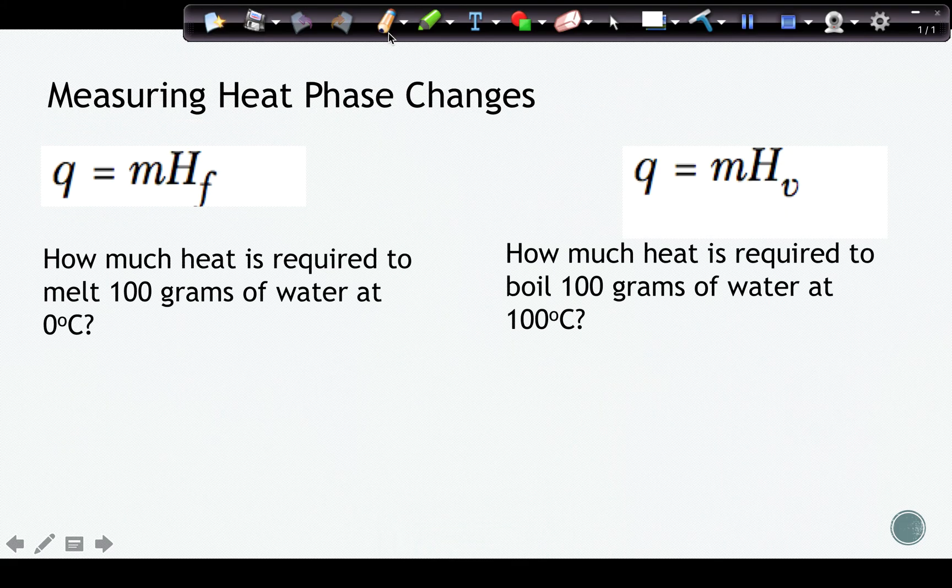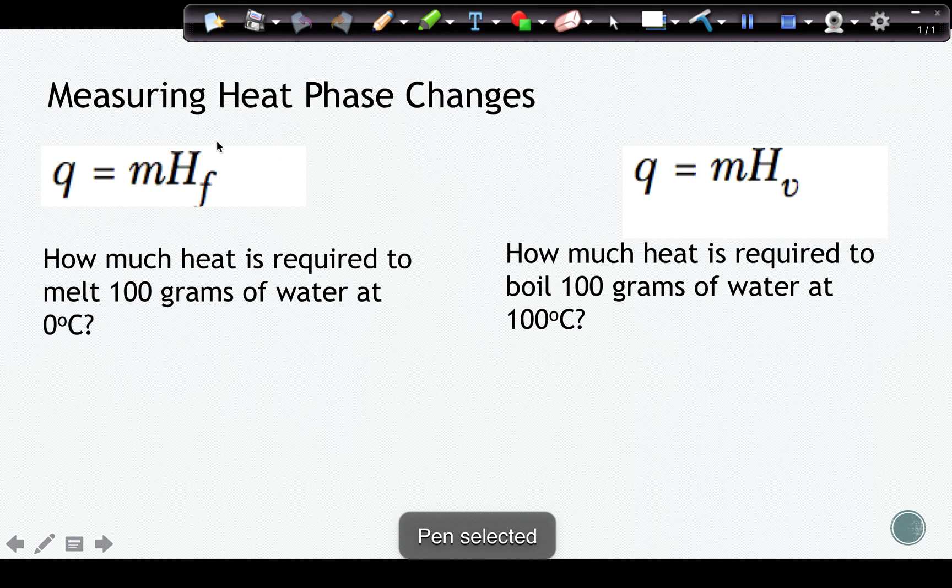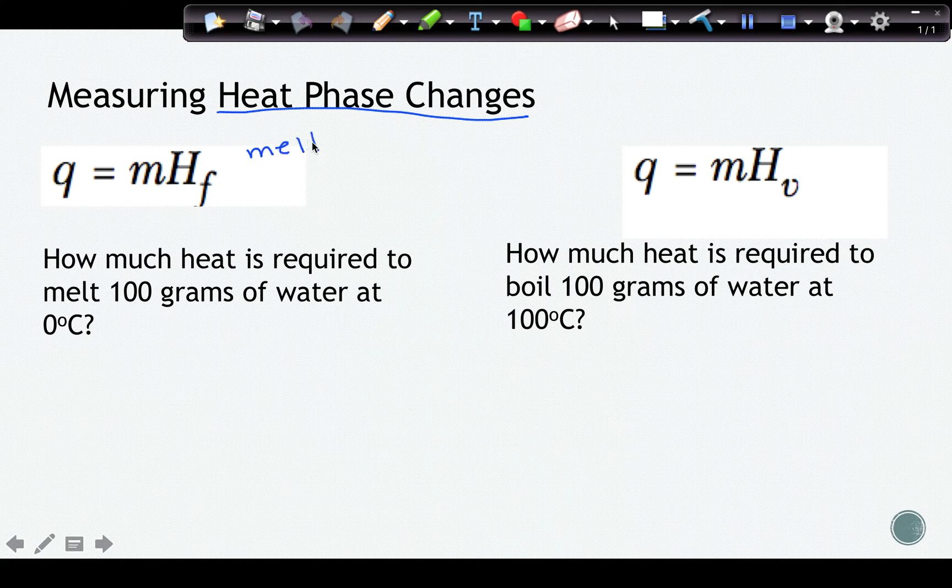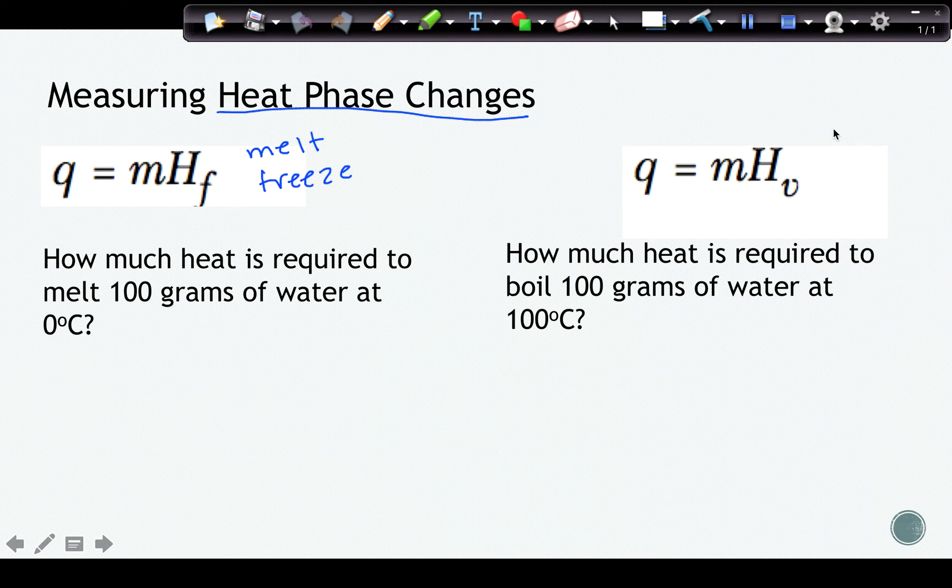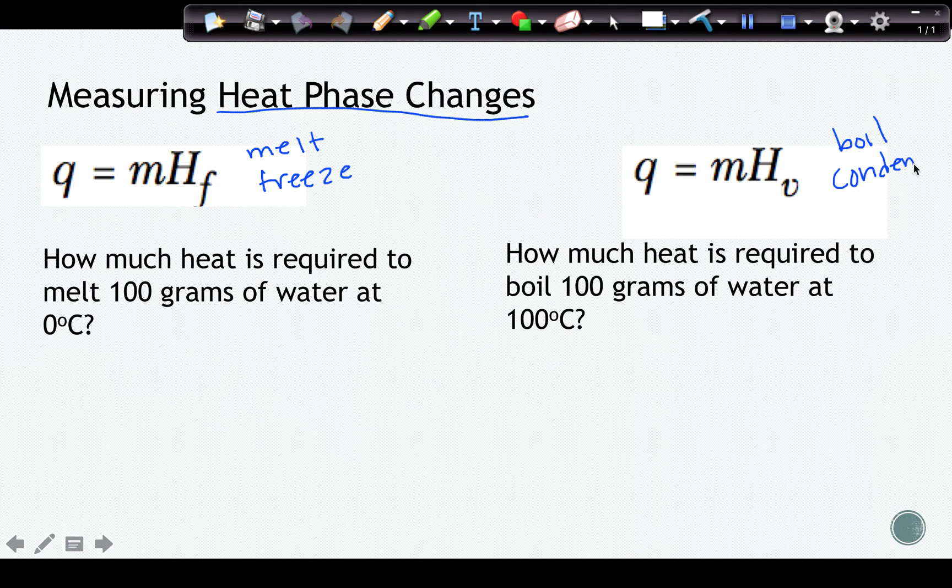On the contrary, if we were doing phase changes, we would use these two formulas. And anything that is melting or freezing goes with MHF. Anything that is boiling or condensing goes with MHV. So we're going to use heat of vaporization for boiling and condensing. We're going to use heat of fusion for melting and freezing.